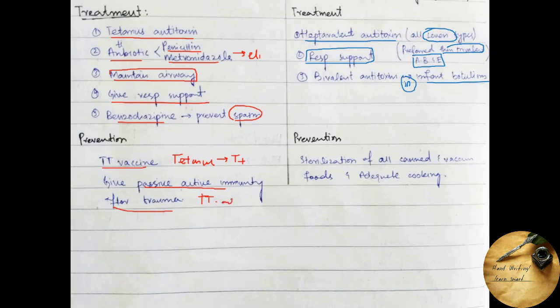Coming towards the prevention of diseases caused by Clostridium botulinum, we can prevent the disease by sterilization of all canned and vacuum foods and by adequate cooking.